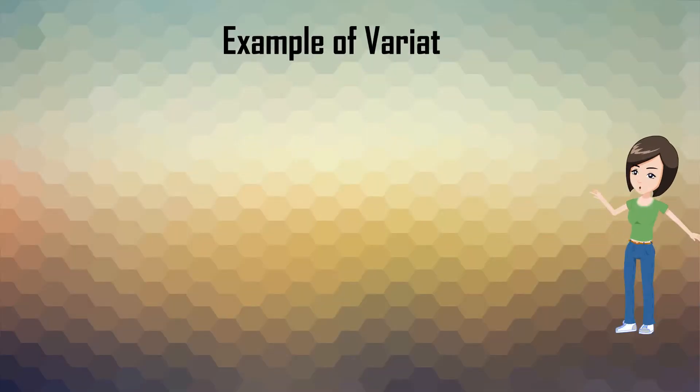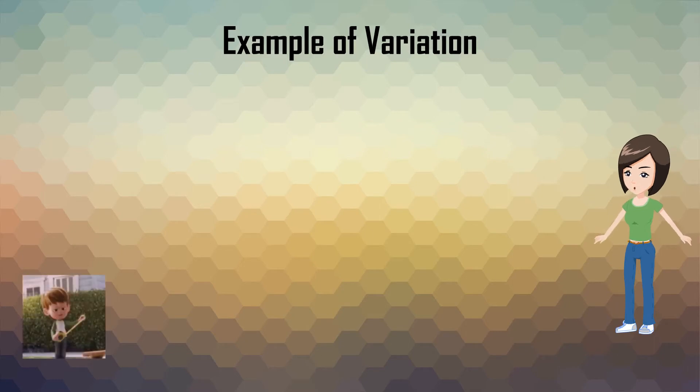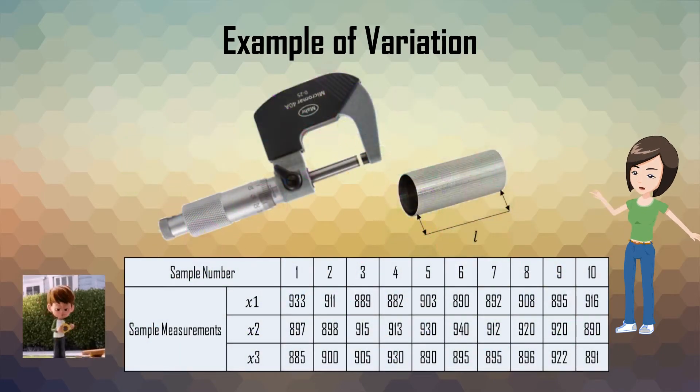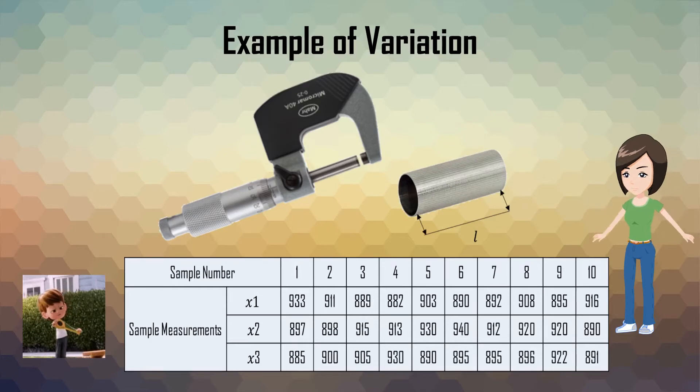Let's take a look at another example of variation. The length of the cylinder has been measured by using the micrometer gauge and the data has been recorded as displayed in the table. By looking at the table, the different values of the length of the steel cylinder is known as variation.